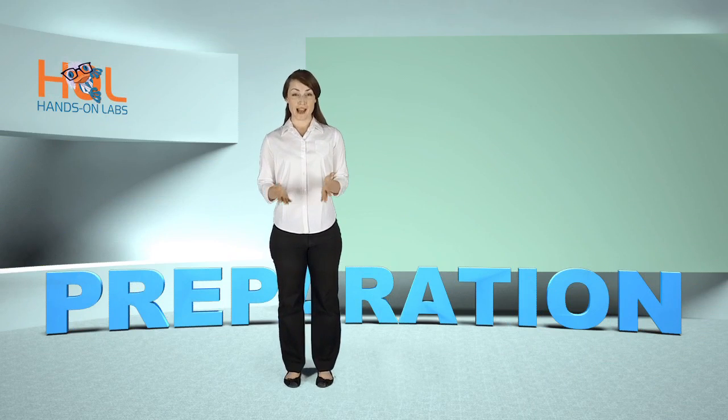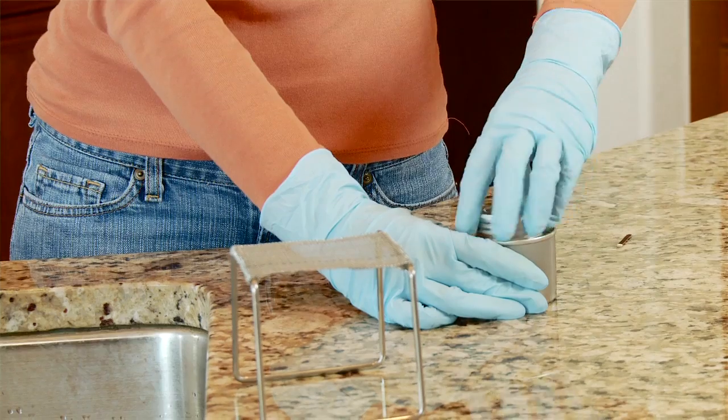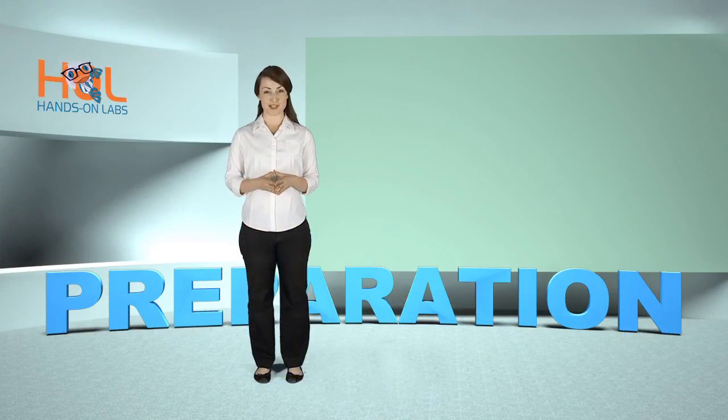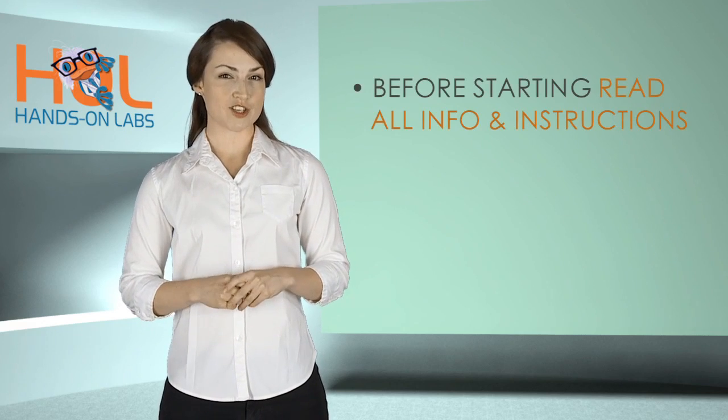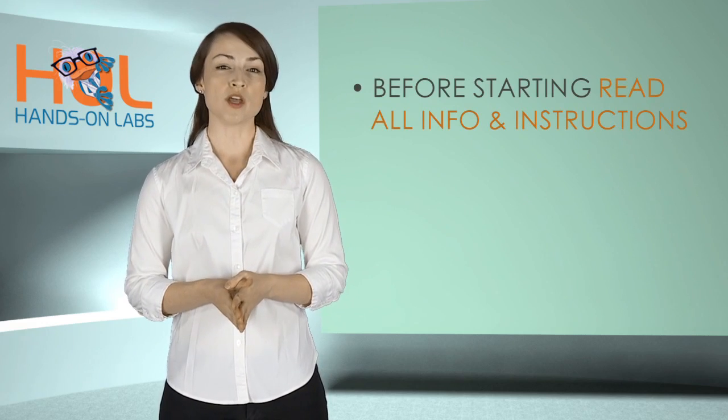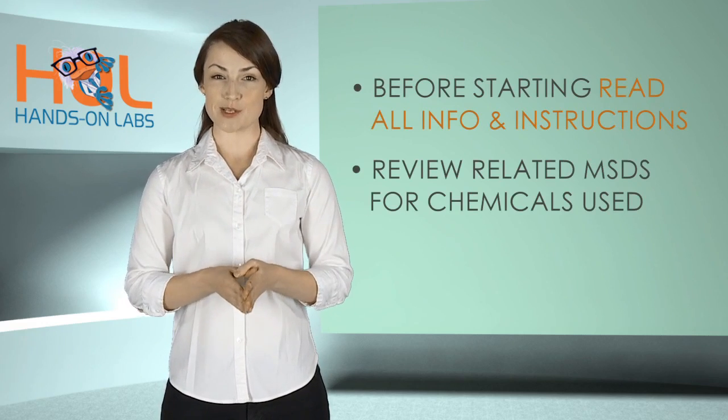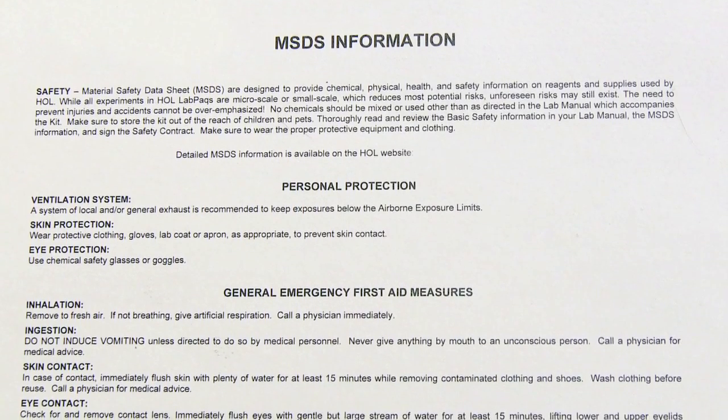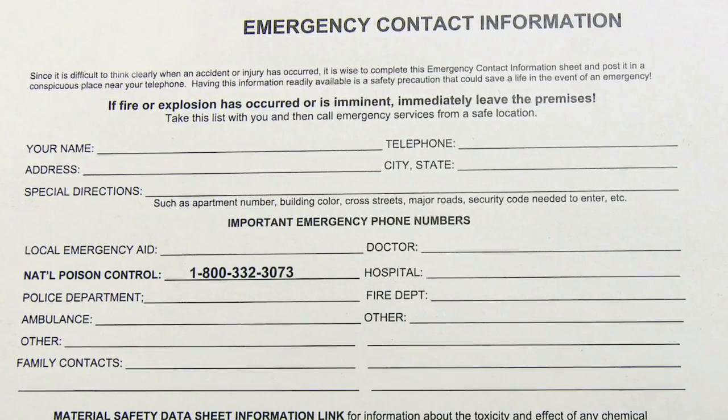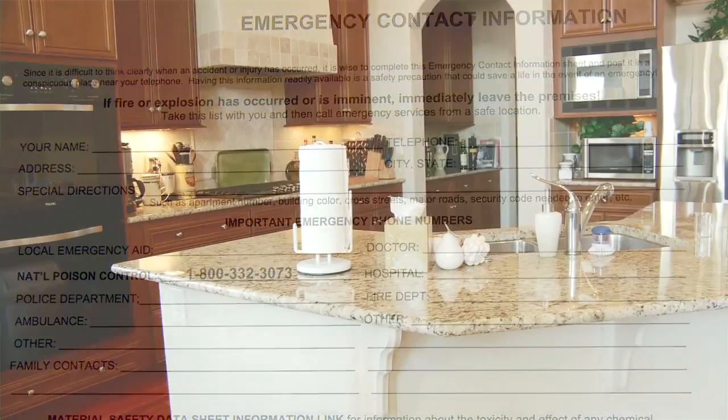The prep phase of your at-home lab work requires gathering, organizing, and preparing all of the materials you will need for your experiment. Here are the steps. Before starting each experiment, read all information and instructions. Review the related material safety data sheets, MSDS, for chemicals used. Complete the emergency contact card and place it near your telephone.